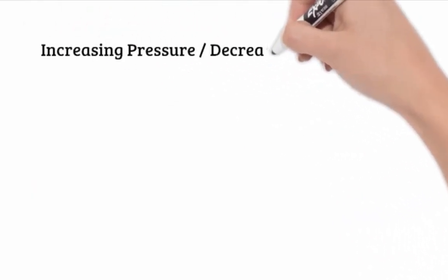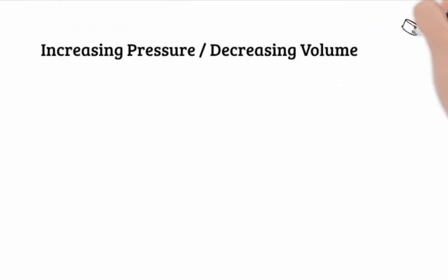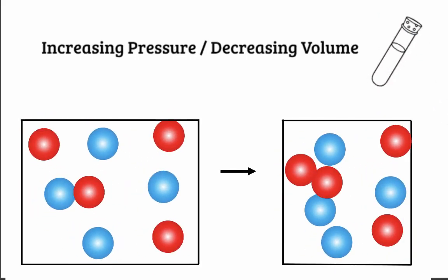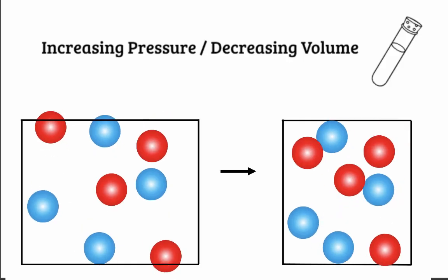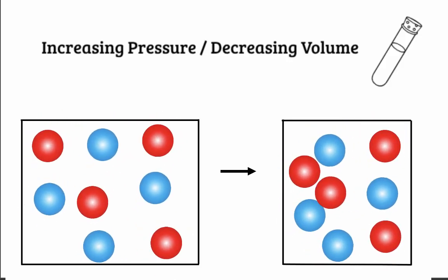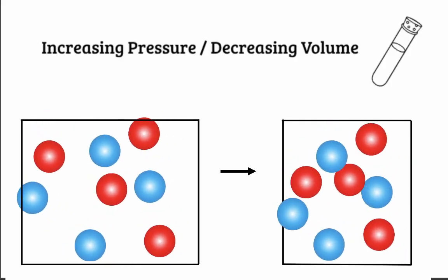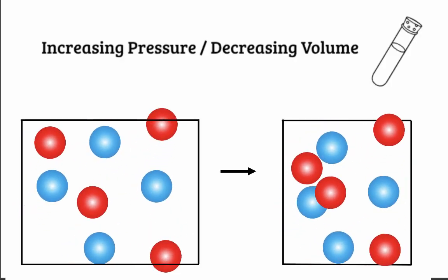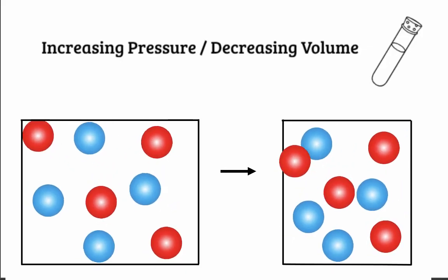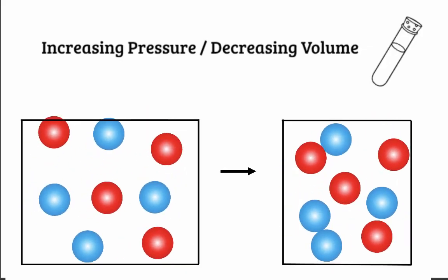The final way to speed up a rate of reaction is to increase pressure. This is only appropriate for reactions happening between gases. By increasing the pressure of a vessel containing two or more gases, you are effectively reducing the volume. This pushes the gas particles closer to one another and increases the likelihood of more frequent successful collisions.